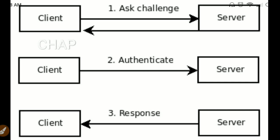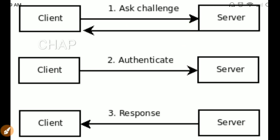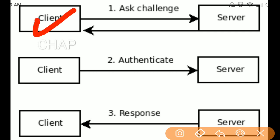Once the client wants to access a network, the client first initiates an initial connection using Link Control Protocol, and this initial connection is unauthenticated. The server then starts the three-way authentication process of CHAP. First, the server sends a random string to the client.